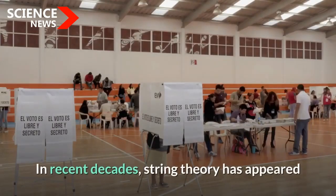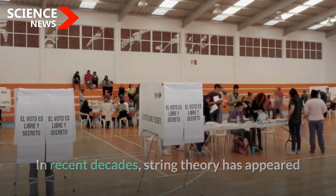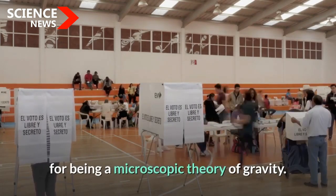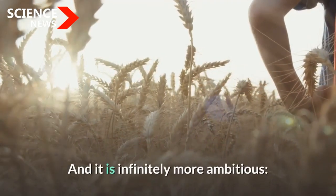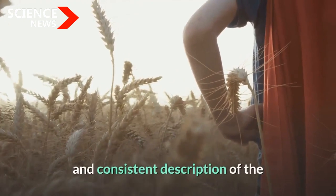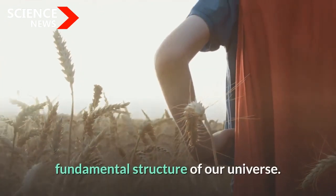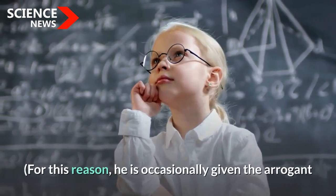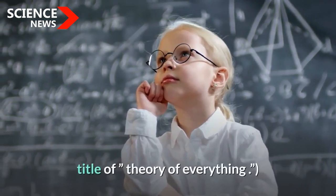In recent decades, string theory has appeared as one of the most promising candidates for being a microscopic theory of gravity. And it is infinitely more ambitious. It pretends to be a complete, unified, and consistent description of the fundamental structure of our universe. For this reason, it is occasionally given the arrogant title of theory of everything.